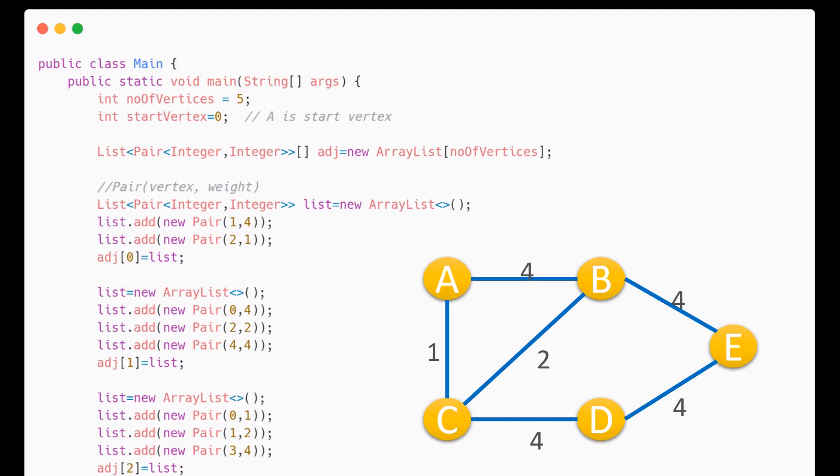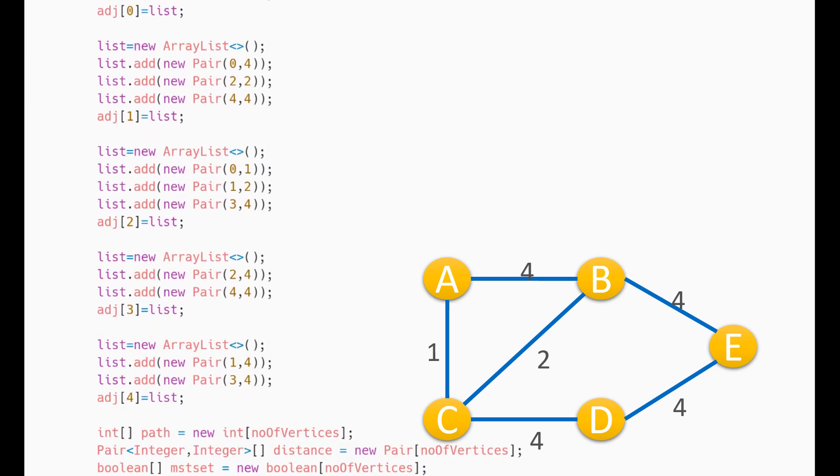We will start with creating the graph. We will have 5 vertices and the start vertex is 0 which is nothing but an integer representation of A. Here the adjacency list will be a pair of two integers where first value is the vertex and second is the weight of the edge between the two vertices. We will create the adjacency list for the graph and once that is done,